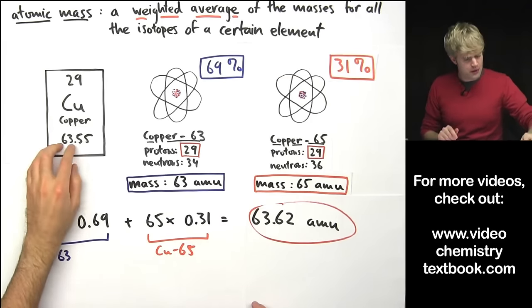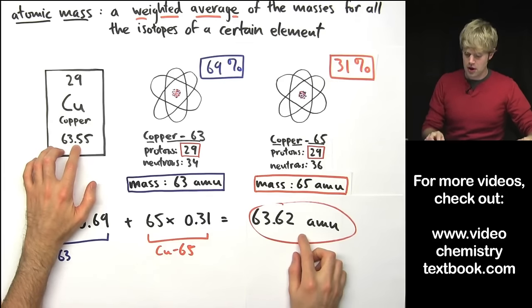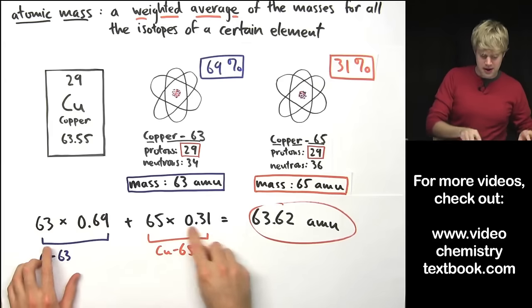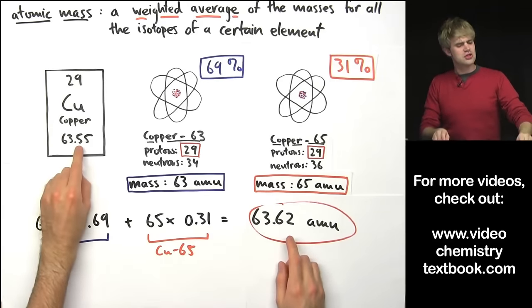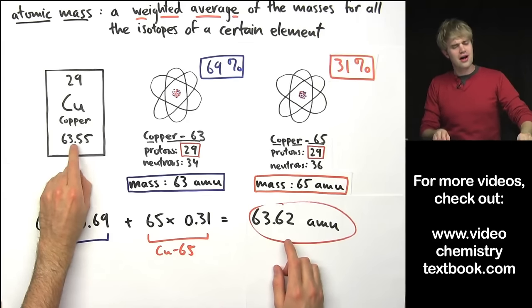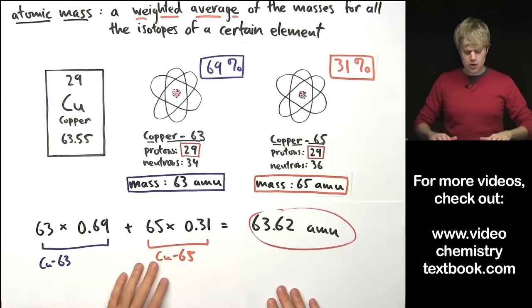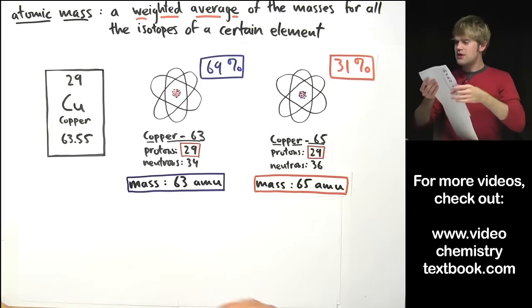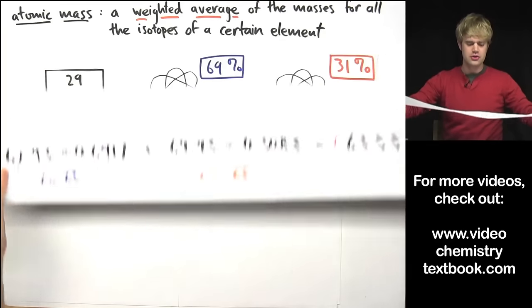Now I told you that this number here on the periodic table represents the atomic mass. You might be wondering why the atomic mass that I calculated here came out to 63.62 and not to the 63.55 that I see here. Well, the reason is because I took some shortcuts here. I used cleaner numbers so that it didn't confuse you as much when we were doing the calculations for the first time.